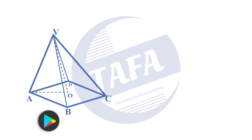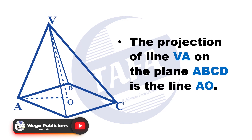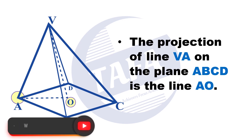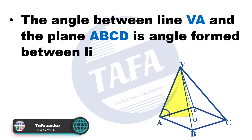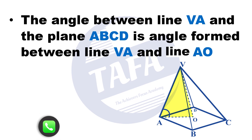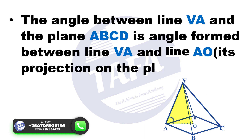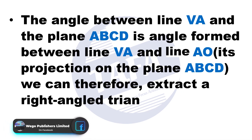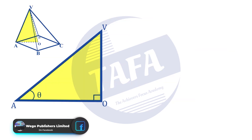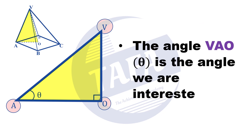For example, looking at the pyramid below, the projection of the line VA onto the plane ABCD is the line AO. The angle between VA and the plane ABCD is the angle formed between line VA and line AO, its projection on the plane ABCD. We can therefore extract a right triangle VAO, where the angle formed between VA and AO is beta.